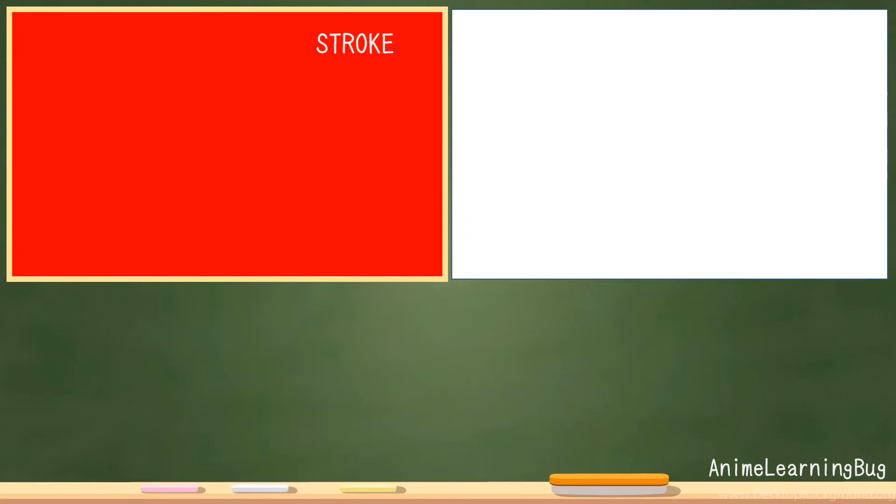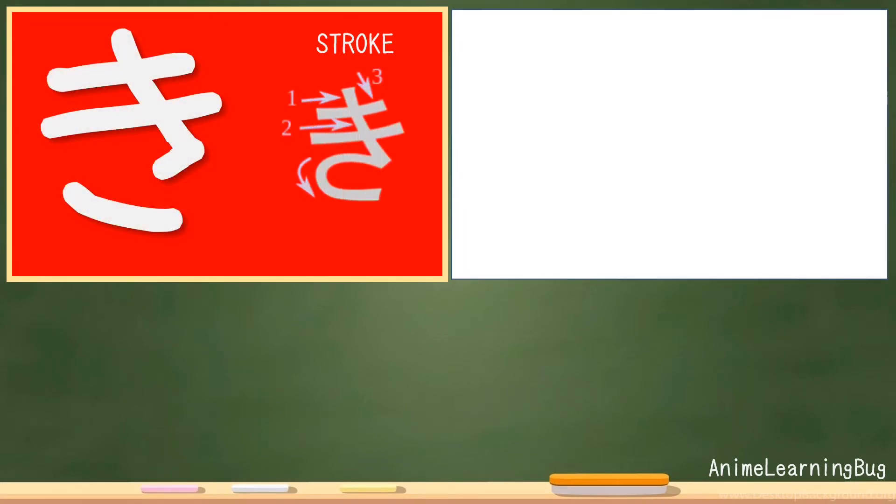Next Hiragana character will be Ki. For the stroke order, there are three strokes to complete this character. And you can check on the video on the right side for the proper stroke order.